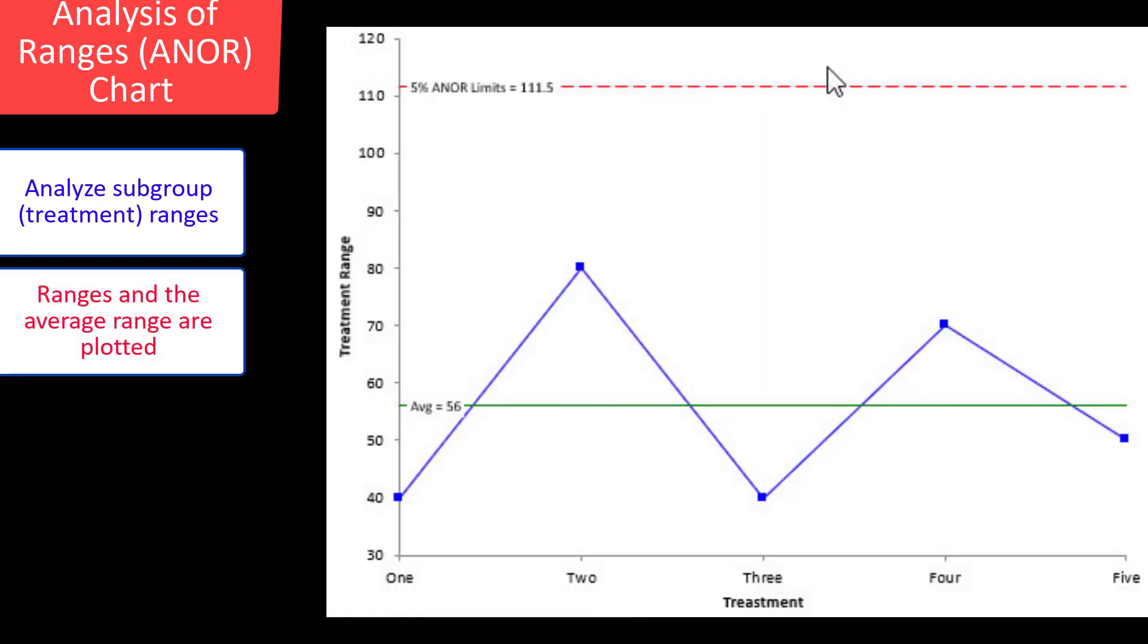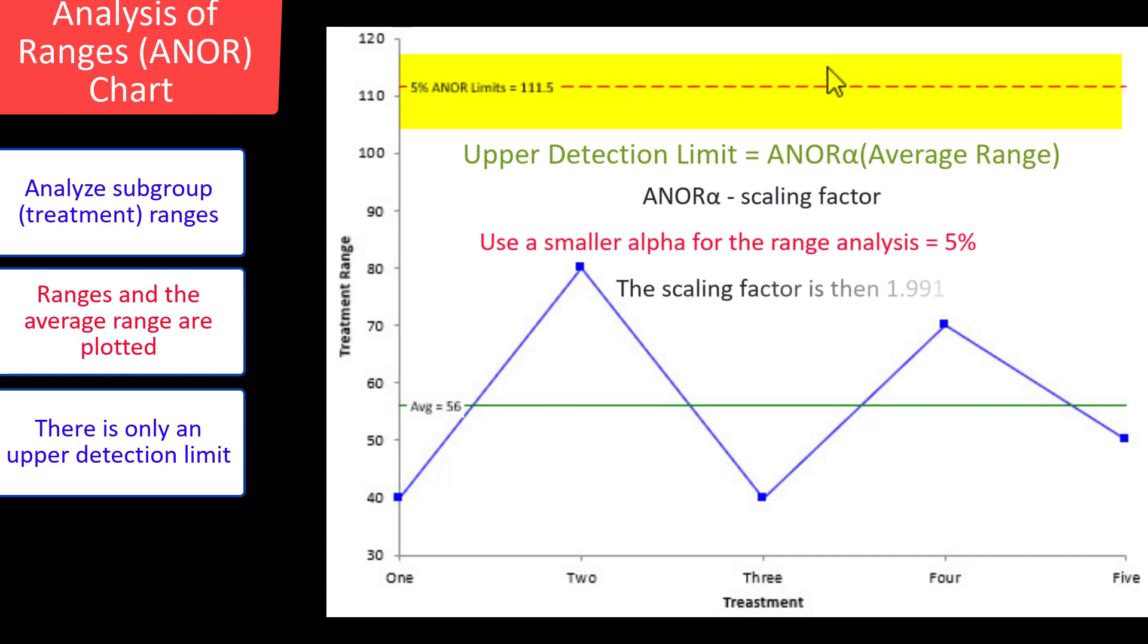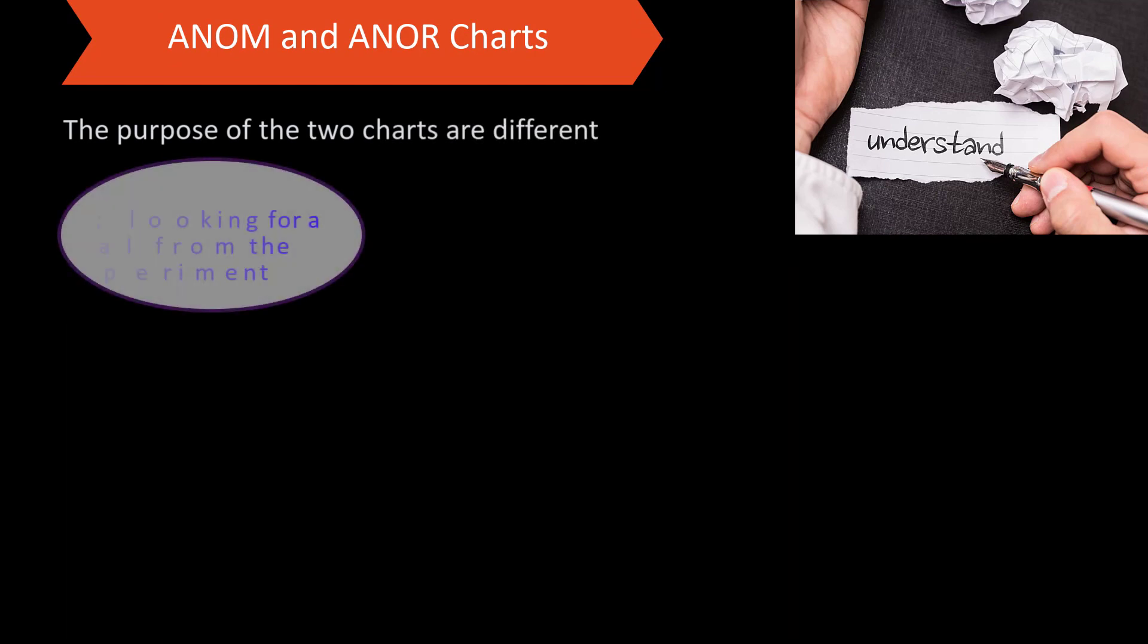The analysis of ranges is done very similar. You analyze the subgroup ranges on this chart. You plot the average and the average range. And there's only an upper detection limit. In this case, it's 111.5. The scaling factor is you're going to use a smaller alpha with the range analysis. It's going to use 5 percent. That gives you a scaling factor of 1.991. And the detection limit is 111. And you can see all the points there are within control.